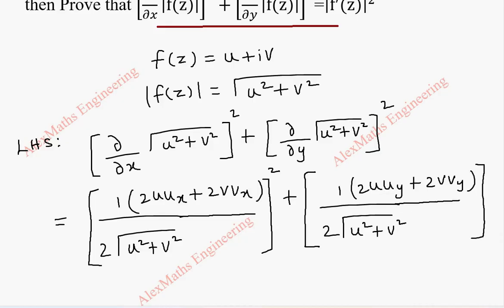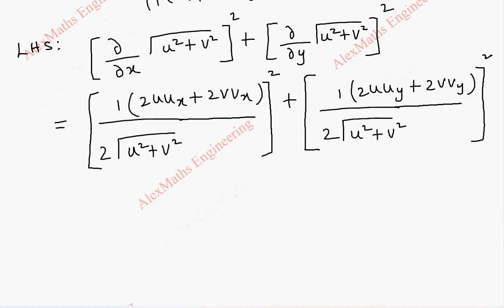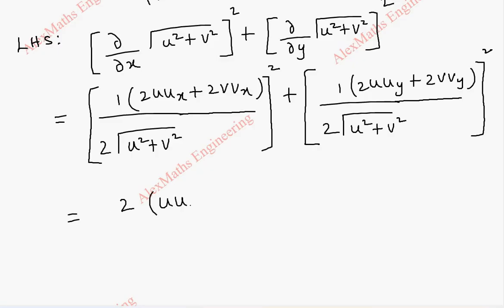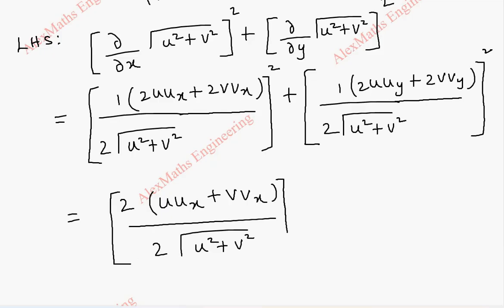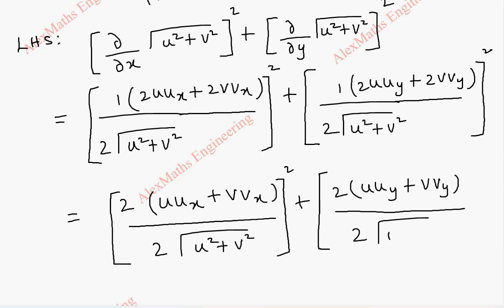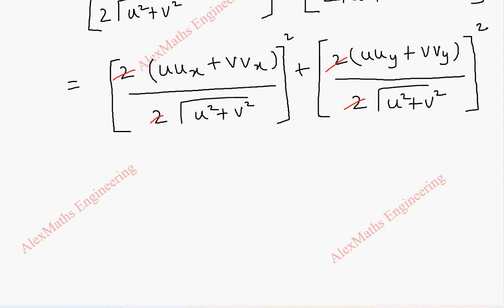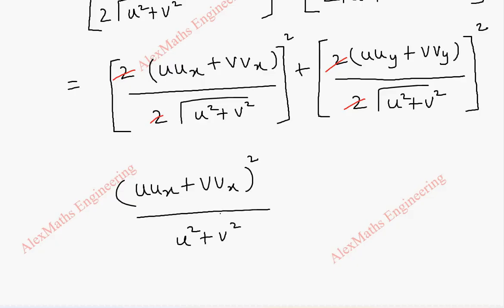1 by 2 root of (u squared plus v squared) into 2u·uy plus 2v·vy, and we close the bracket. Now in the numerator we can take 2 common. So it is (u·ux plus v·vx) whole divided by 2 root of (u squared plus v squared), whole squared, plus (u·uy plus v·vy) whole divided by 2 root of (u squared plus v squared), whole squared. We can cancel the 2s, and squaring numerator and denominator separately, we get (u·ux plus v·vx) squared by (u squared plus v squared).